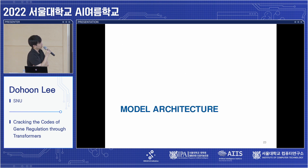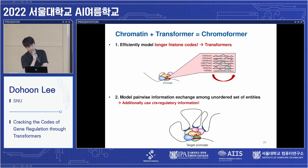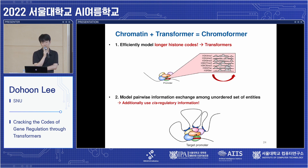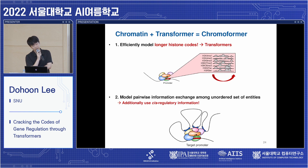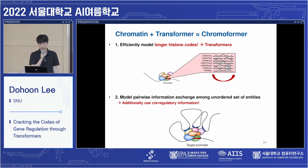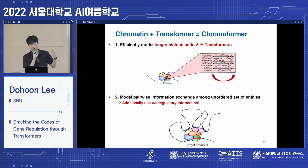Now I'm going to briefly introduce the proposed model architecture. In this study, we are proposing a transformer-based model called Chromoformer. Chromoformer has two main strategies: first, it efficiently models longer histone codes using transformers, and secondly, it incorporates cis-regulatory information.